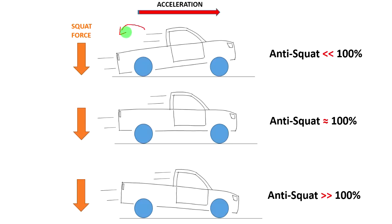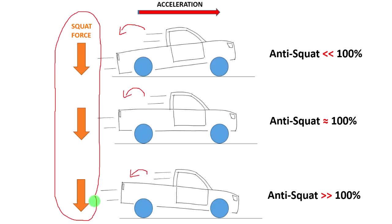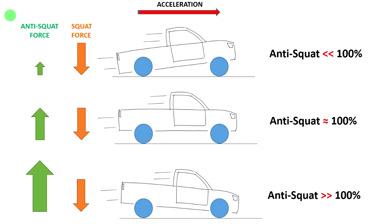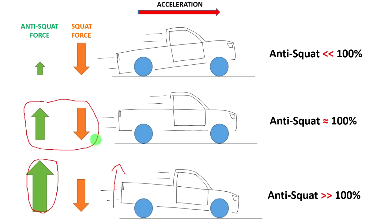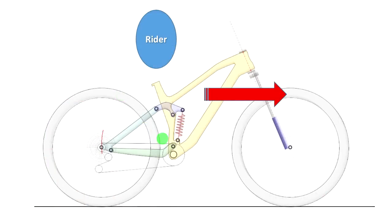The squat force is caused by weight transfer to the rear, and since acceleration is the same in all cases, this force is the same in all three. What changes is the amount of anti-squat force. With very high anti-squat, the rear of the car rises; with perfect balance (100%), nothing happens; with very low anti-squat, the suspension squats.